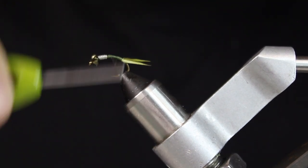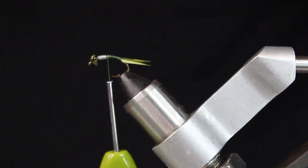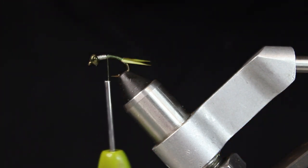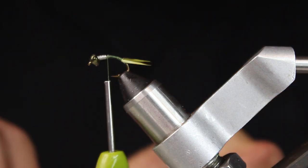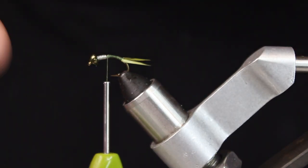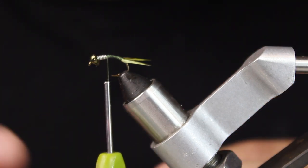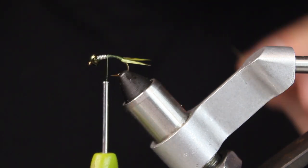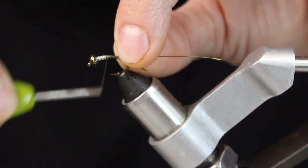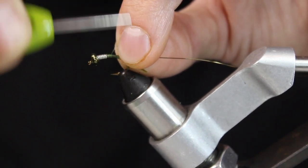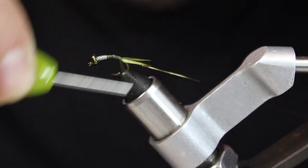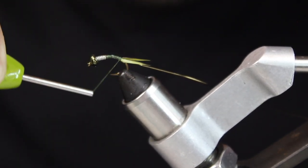So now I'm going to put in some Sculpin Olive UTC Medium wire. I use a ton of medium wire, even on smaller flies like a Higa's SOS where you wrap just a few wraps on the body. I like the medium. I use a lot of brassy too and some small. I'll use small on tiny little stuff, but I really use a lot of medium. I'm going to put this right behind my lead wraps. I don't want to put it on my lead wraps because that's going to add too much bulk.